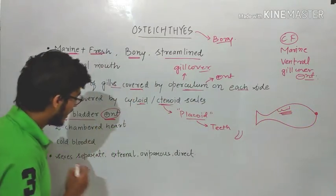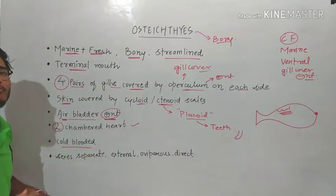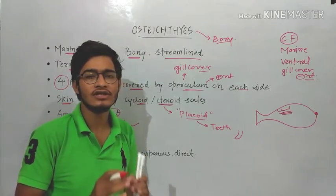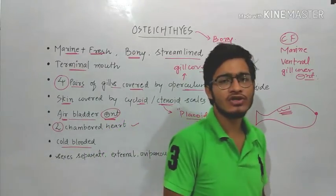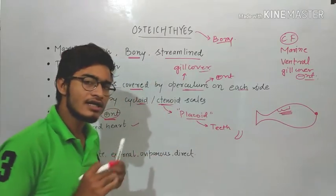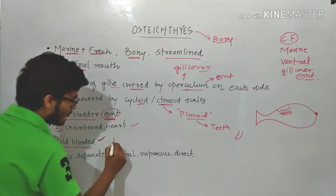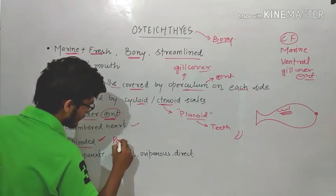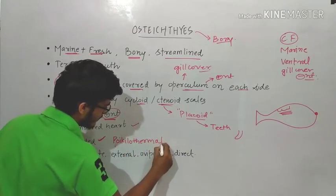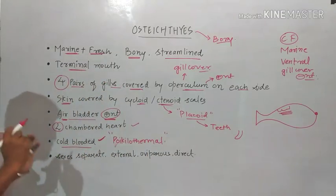After that, the heart is two-chambered, which is a common character of both fishes. They are cold-blooded or poikilothermal, which simply means that they cannot regulate their internal body temperature — their body temperature fluctuates along with the external environment conditions. Both of the fishes are poikilothermal in nature.